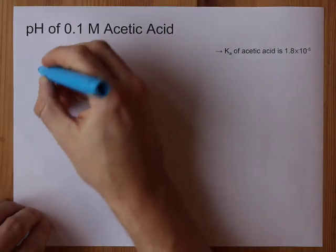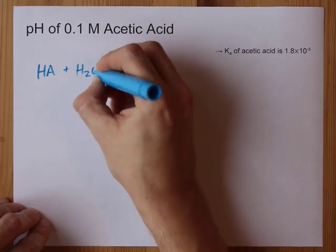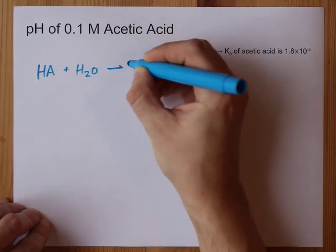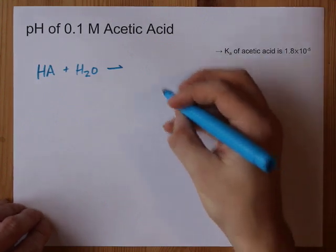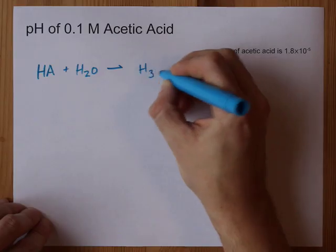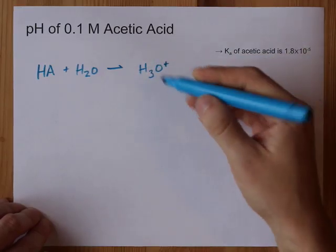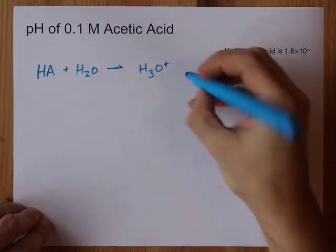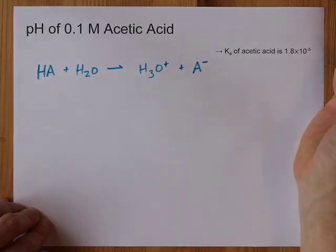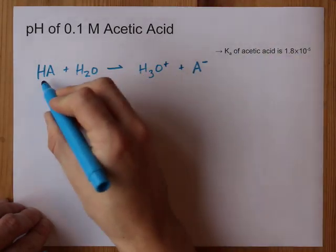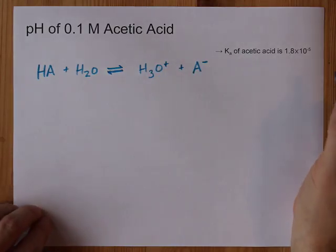What a weak acid means is that the acid itself, when it mixes with water, does not give you a 100% yield of H3O+, or H+, depending on how your teacher taught you. I always teach it as H3O+, which is water with an extra H on it. So there's the H3O+, plus the acid that's left over, A-.